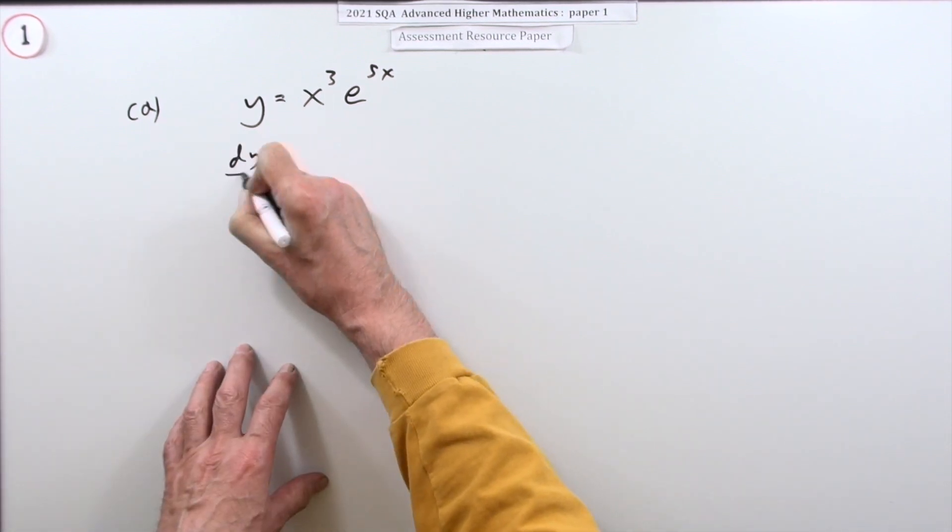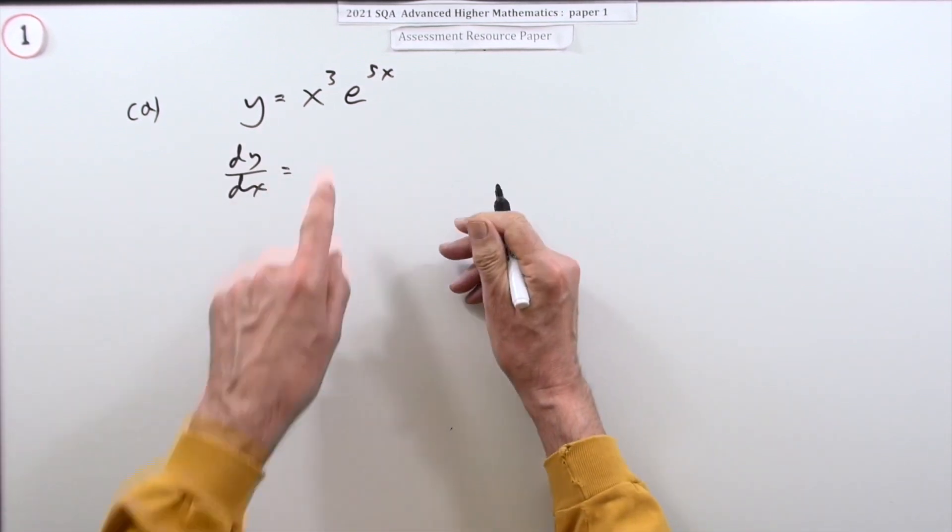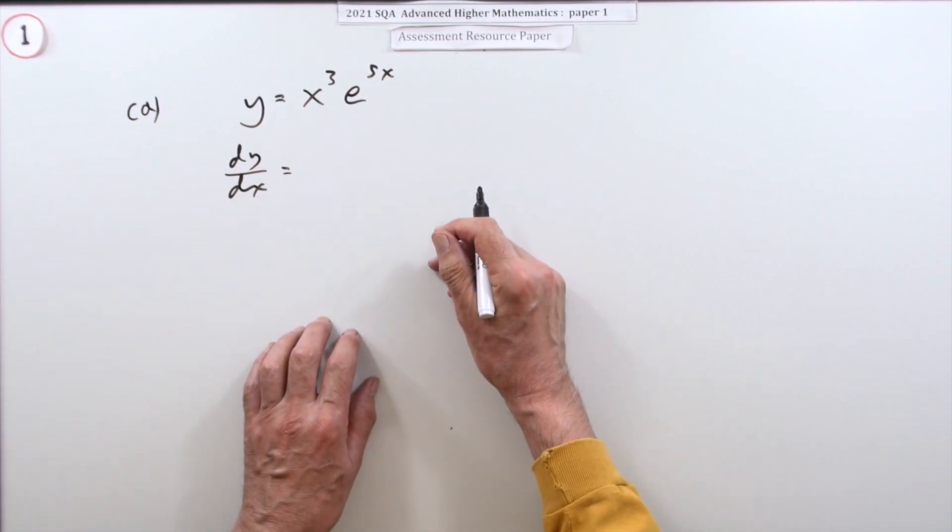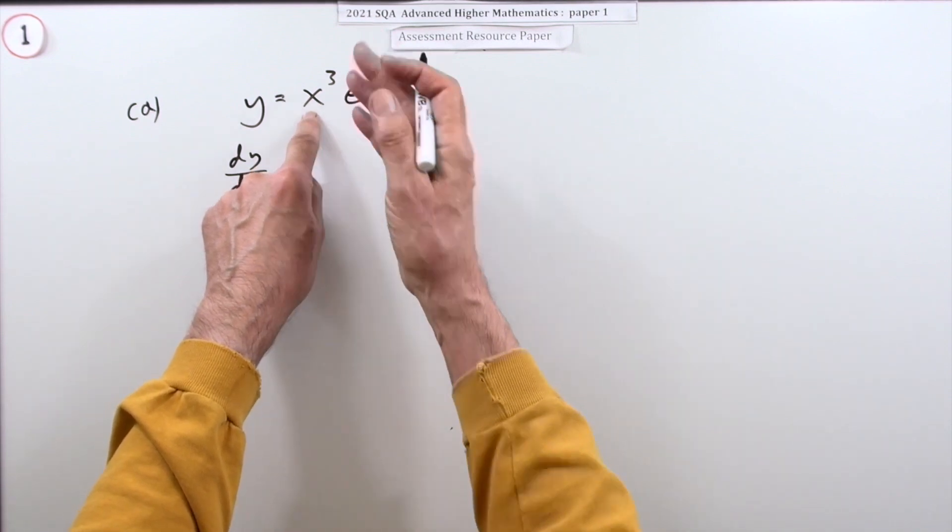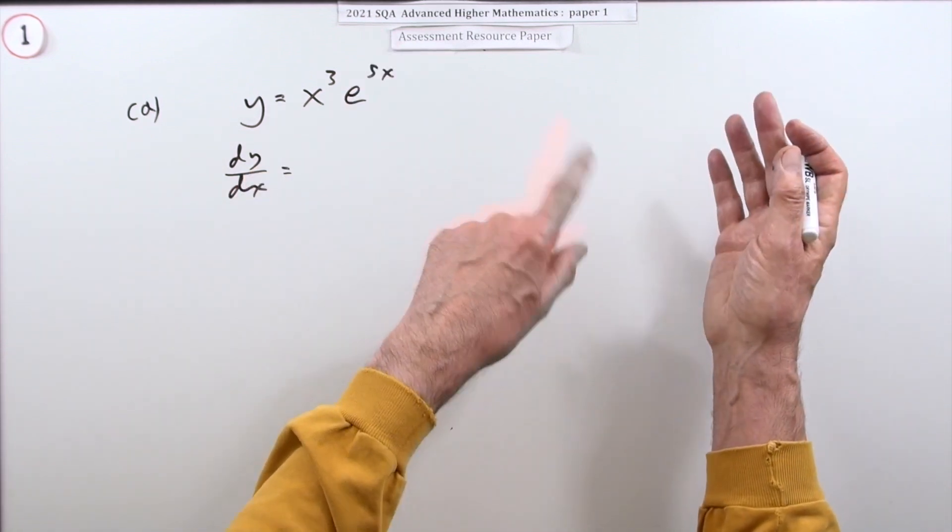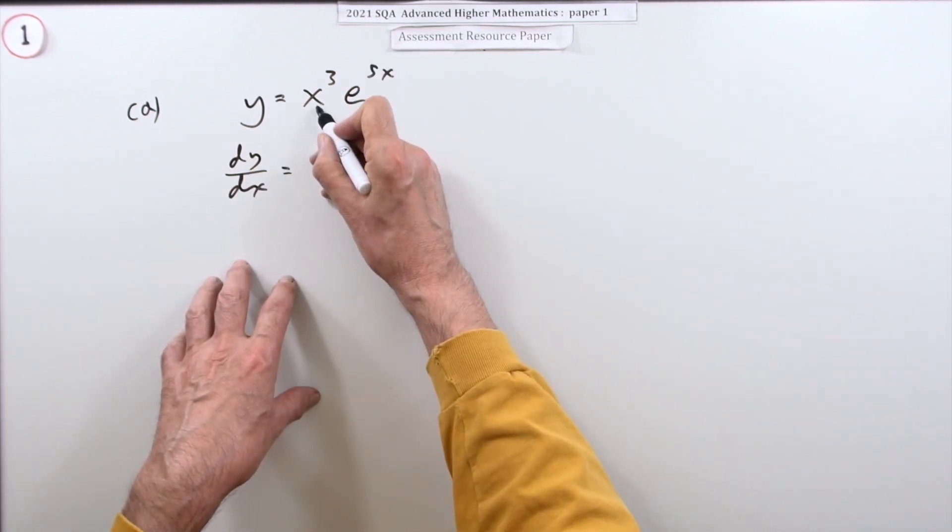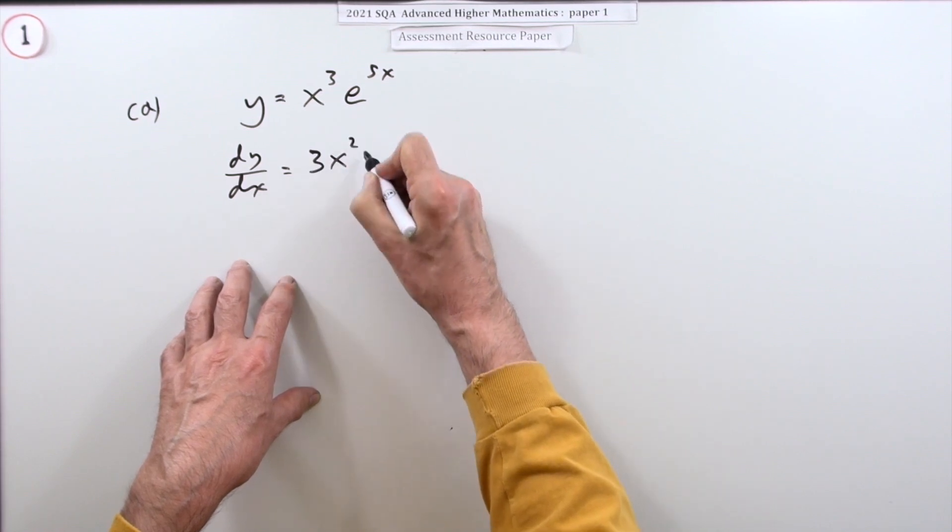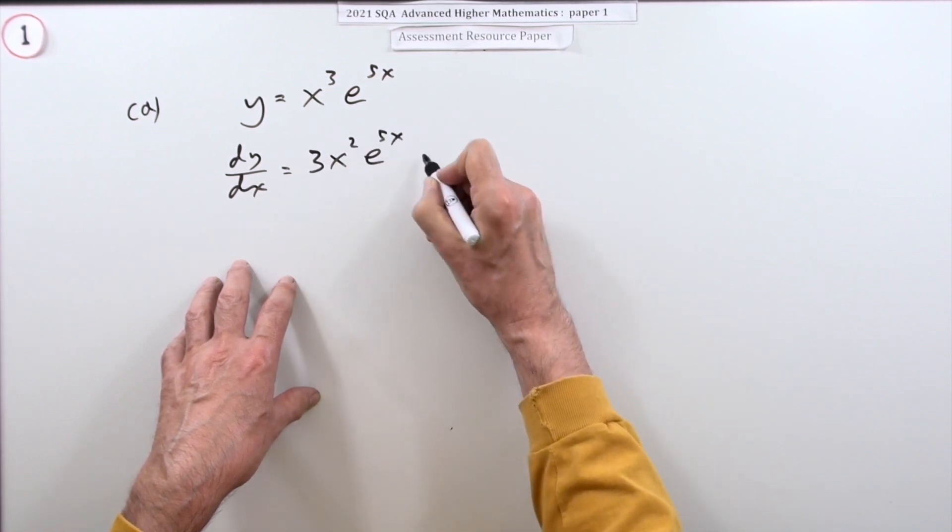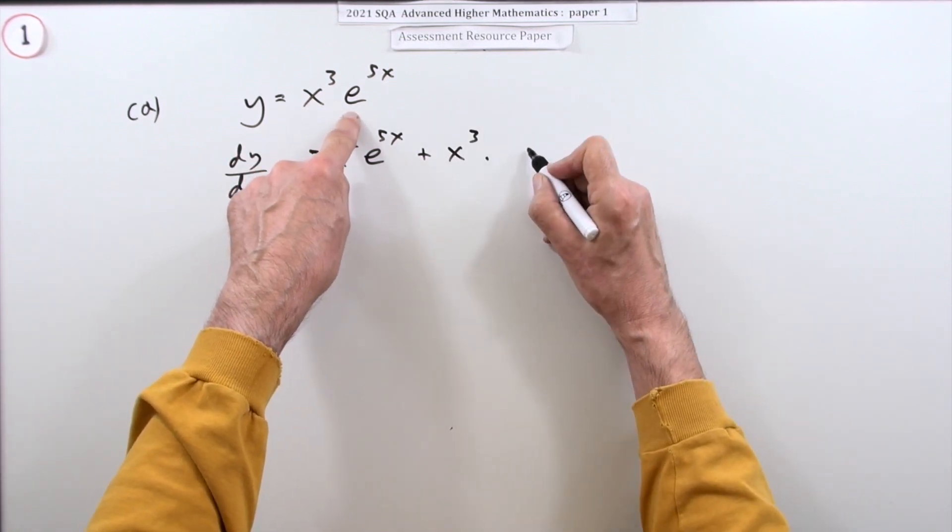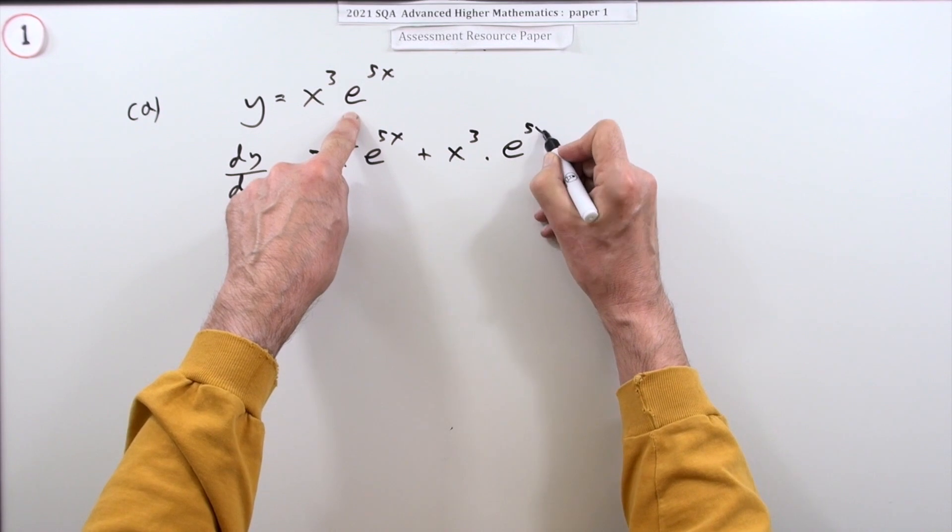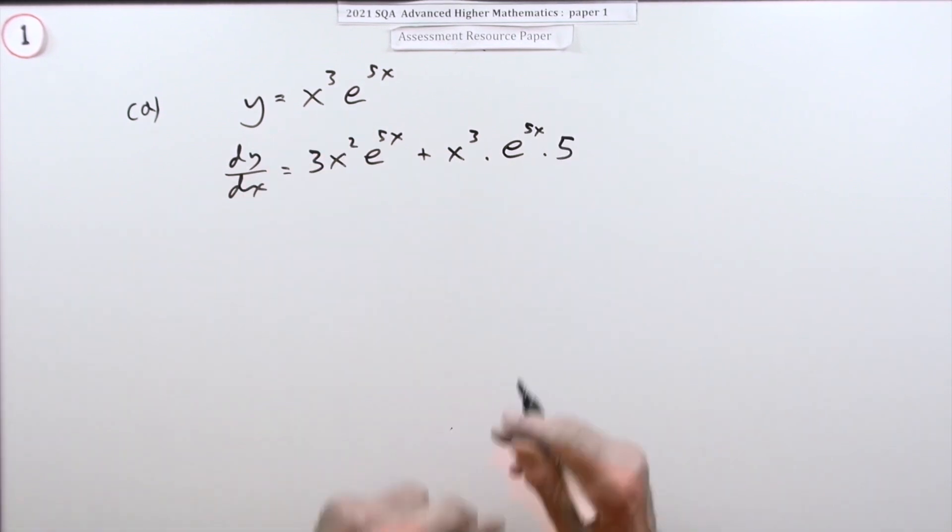Well in part A it's the product rule so they each take their turn. The net rate of change equals the rate of change of one keeping the other constant plus the rate of change of the other keeping the first constant. So differentiating that first, 3x² leaving that alone, then leaving that alone and seeing what happens to this one - e^(5x) stays as e^(5x) except it gets multiplied by 5.